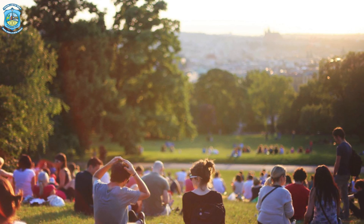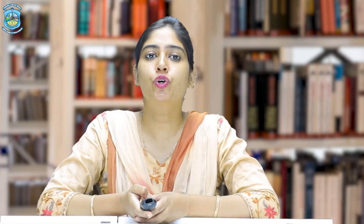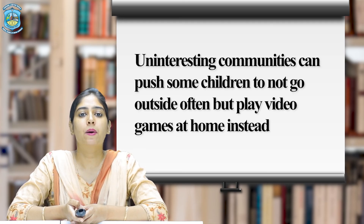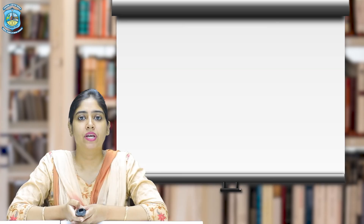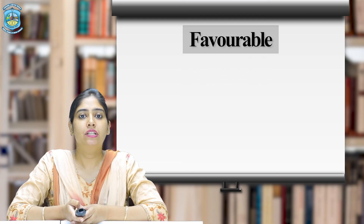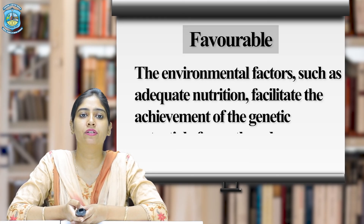Geographical influences: Where you live has a great influence on how your children turn out. The schools they attend, the neighbourhood they live in, the opportunities offered by the community and their peer circles are social factors affecting a child's development. Living in an enriching community with parks, libraries and community centres for group activities and sports plays a role in developing the child's skills, talents, potentials and behaviour. Uninteresting communities can push some children to stay indoors and play video games. Even the weather of a place influences children through bodily rhythms, allergies and other health conditions.